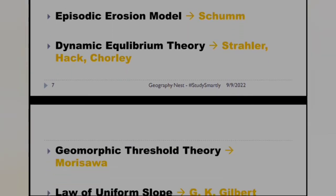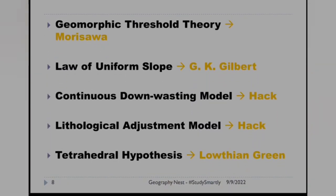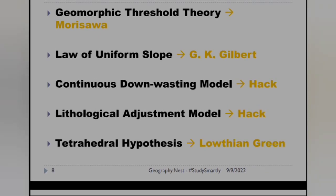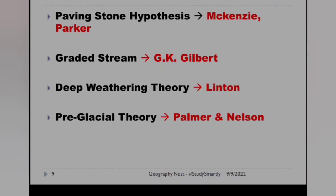These three persons are associated with dynamic equilibrium theory. Next is geomorphic threshold theory — this was given by Morisawa. Law of uniform slope was given by G.K. Gilbert. Continuous downstream model was given by Hack. Lithological adjustment model was given by Hack. Tetrahedral hypothesis was given by Lothian Green. Paving stone hypothesis was given by Mackenzie and Parker. Graded stream concept was given by G.K. Gilbert. Deep weathering theory was given by Linton, and preglacial theory was given by Palmer and Nelson.